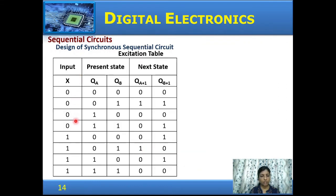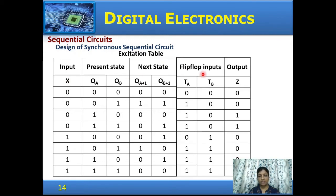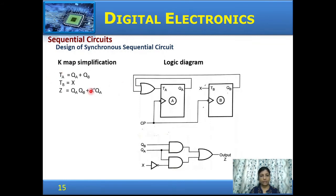Rewrite the state table with inputs in one column — four combinations for input 0 and four for input 1. Draw the excitation table using T flip-flops and include the output columns for X=0 and X=1. Using K-maps with variables X, QA, and QB, derive logic expressions for TA, TB, and the output. Draw the logic diagram with two T flip-flops; the output expression is QA·QB and QA·X', combined with an OR gate.